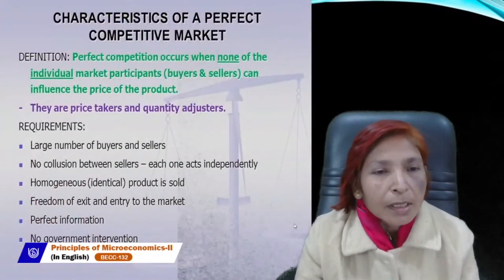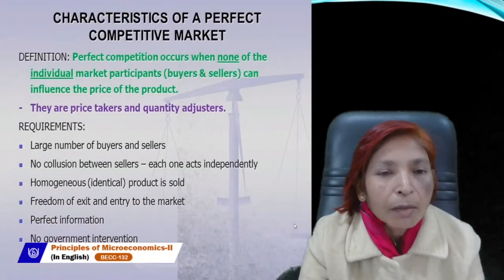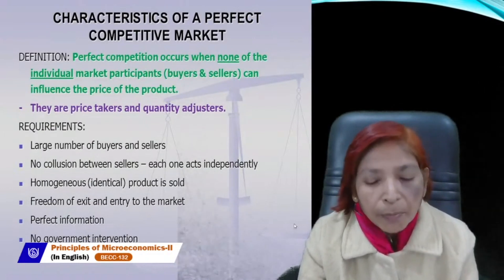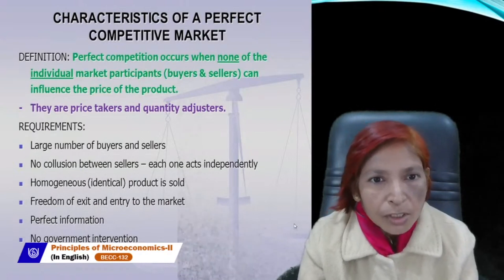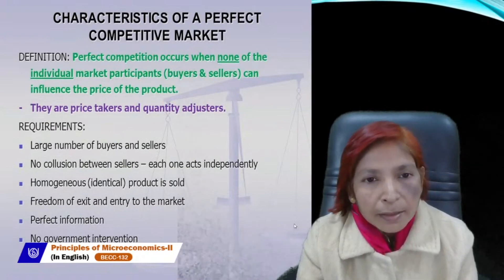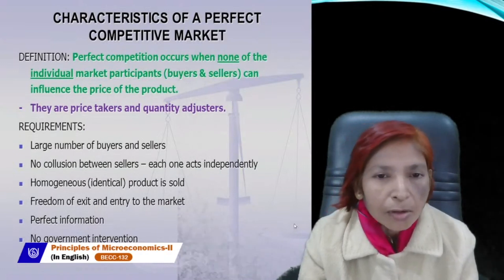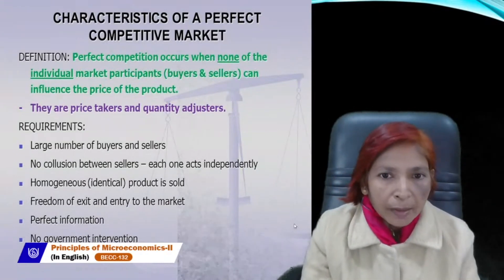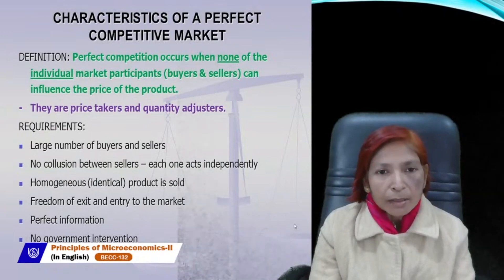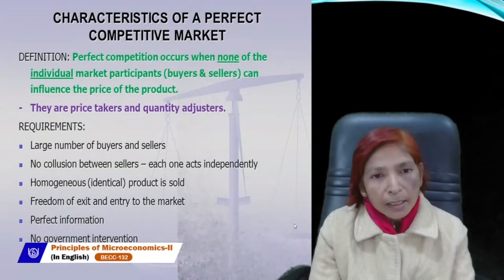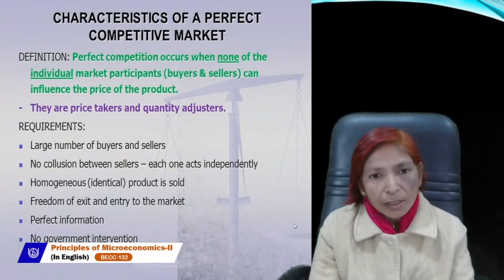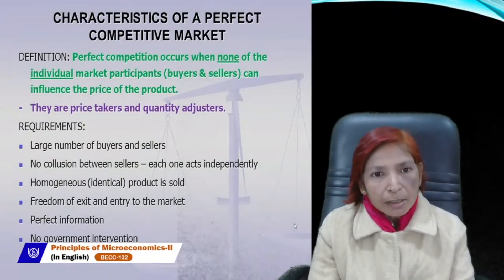Perfect Competition is a market where all buyers and sellers sell homogeneous product. It is a market in which buyers and sellers exist in large numbers. All these sellers sell the same or homogeneous product — there is no difference in the product in terms of color, size, design, or packing.